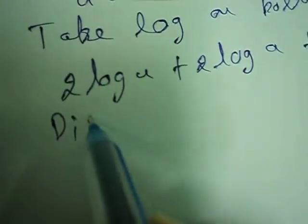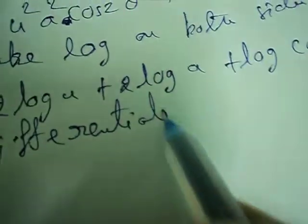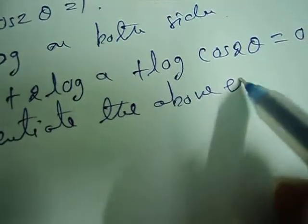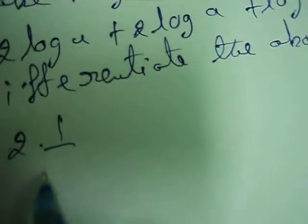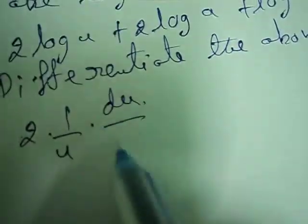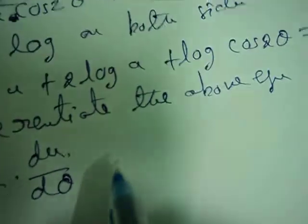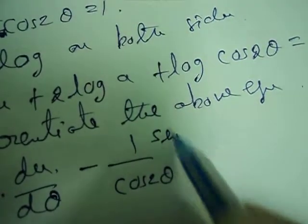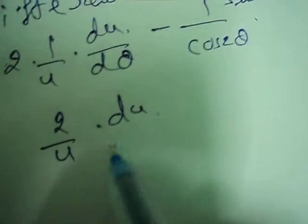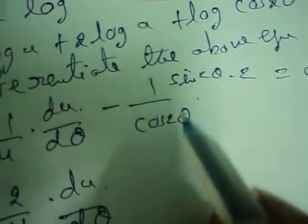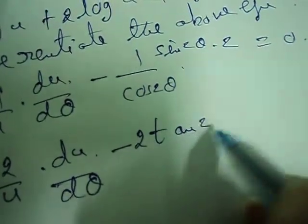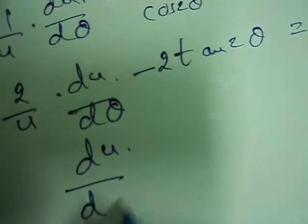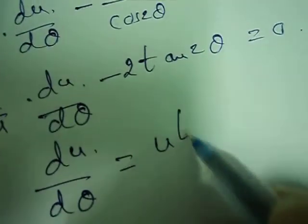Differentiate this equation. It will become 2·(1/u)·du/dθ — since log(a) is constant, differentiating gives 0 — plus (1/cos(2θ))·(−sin(2θ))·2 = 0. So 2/u·du/dθ = tan(2θ), which gives du/dθ = u·tan(2θ). Call this equation 1.